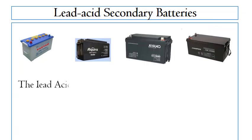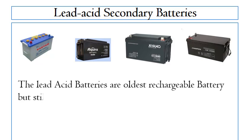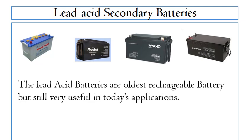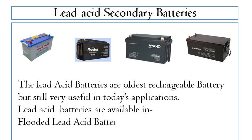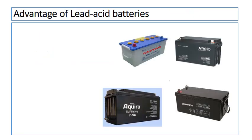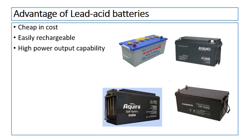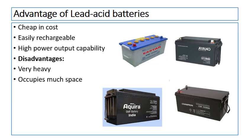The lead-acid batteries are the oldest rechargeable battery, but they are still very useful in today's applications. The power density of these batteries is 7Wh per kg. Lead-acid batteries are available in two types: flooded lead-acid batteries and sealed lead-acid batteries. Advantages include being cheap in cost, easily rechargeable, and providing high power capacity. Disadvantages are that they are very heavy, occupy more space, and have low power density.